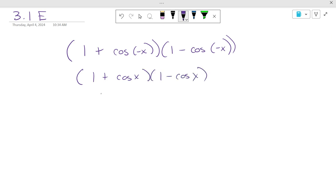So if we FOIL, 1 times 1 is 1. Outers is negative cosine. Inners is positive cosine. They're conjugate pairs, so the middle terms cancel. And cosine times cosine is cosine squared of x. What's 1 minus cosine squared equal to? Sine squared of x.